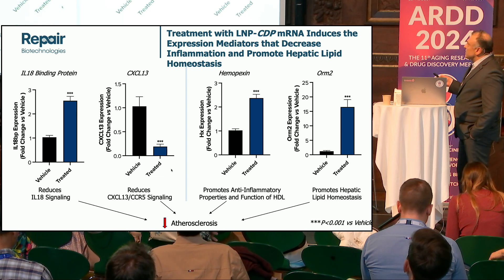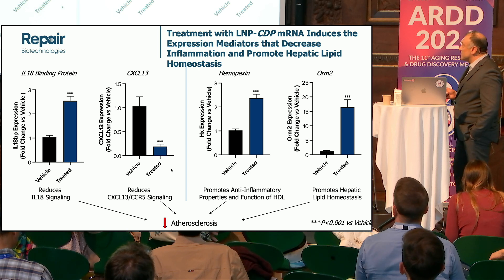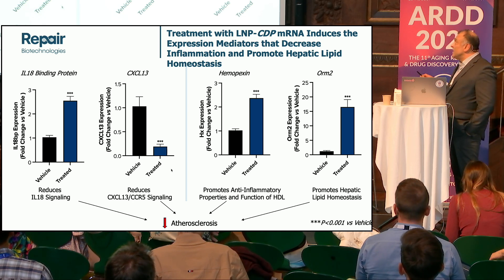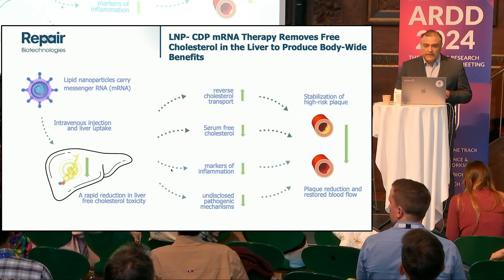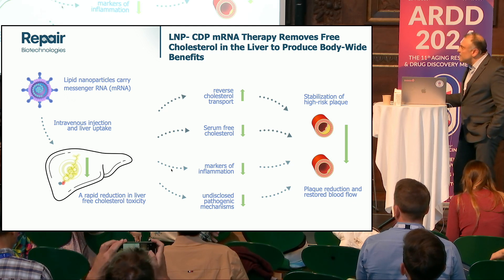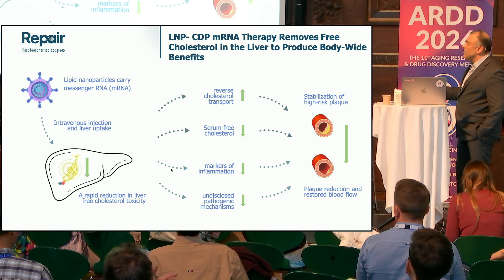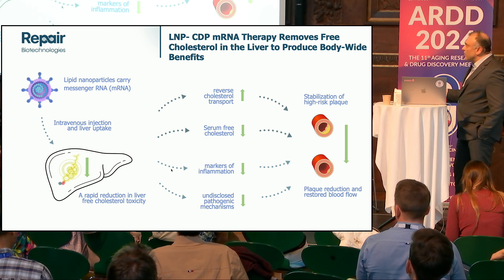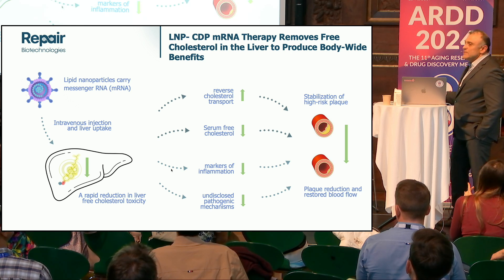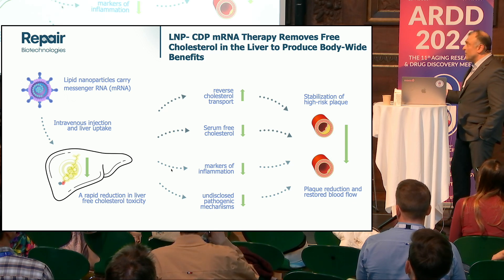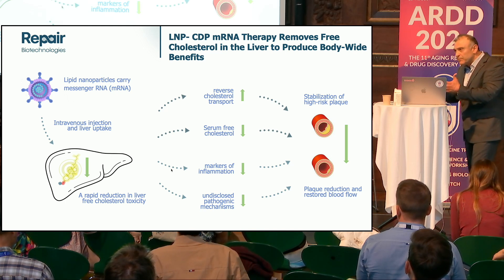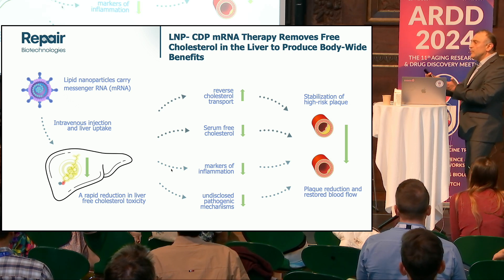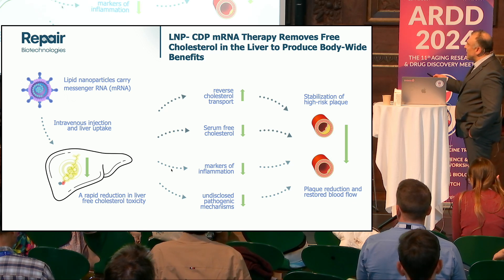There's also ORM2 — there's a recent Nature publication on this topic. ORM2 actually promotes hepatic lipid homeostasis, and weekly injections of ORM2 in mice can actually reverse both MASH and atherosclerosis. So what we believe is that by reducing free cholesterol in the liver, we are launching multiple different mechanisms: increasing reverse cholesterol transport, decreasing serum free cholesterol, decreasing markers of inflammation, and decreasing pathogenic mechanisms. We are currently trying to patent aspects of this. All of this leads to a slowing of the rate of plaque progression and an increase in the rate of plaque regression, leading to more stable and smaller plaque.